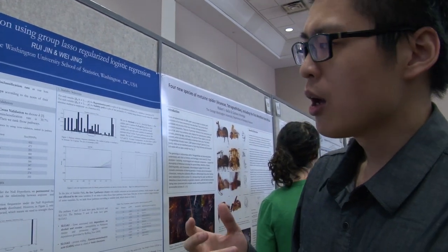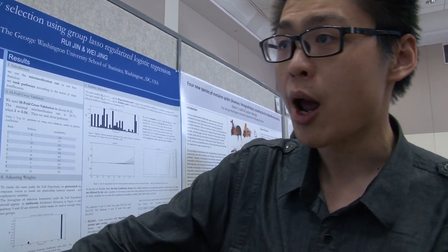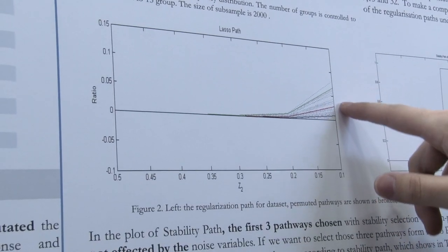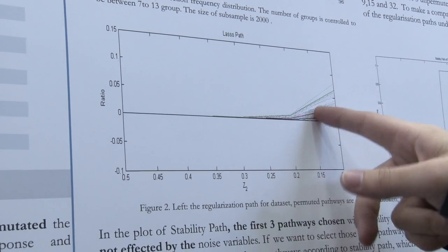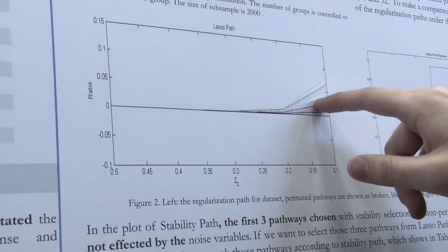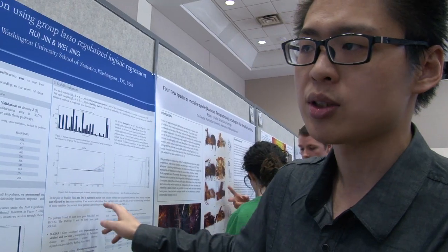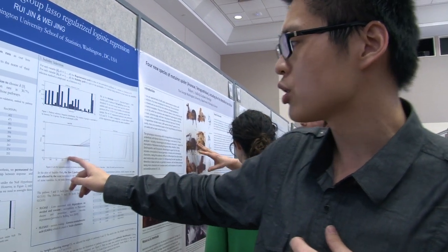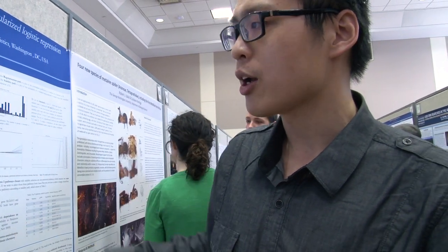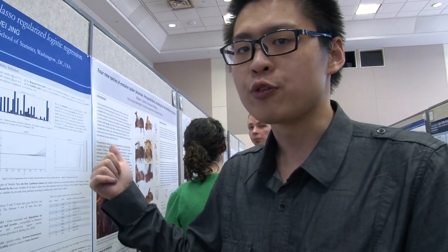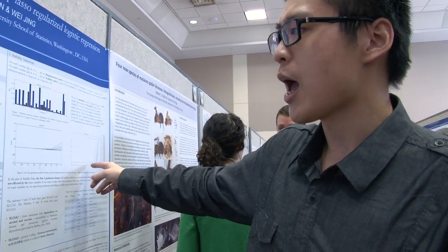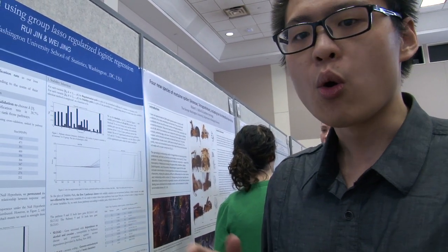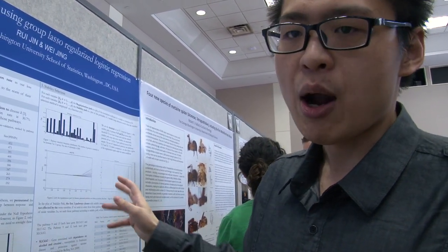So we try to use another way to select a proper unknown parameter — stability selection. We permute the other data, which means we break the relationship between the other pathways and just keep the three target pathway relationships, so the other pathway data will be noise. From this plot, we can see that if we want to select three target pathways using cross-validation, we also have to select a lot of noise variables. With the stability selection plot, the first three pathways selected are our target pathways, which means our method can filter out a lot of noise variables.